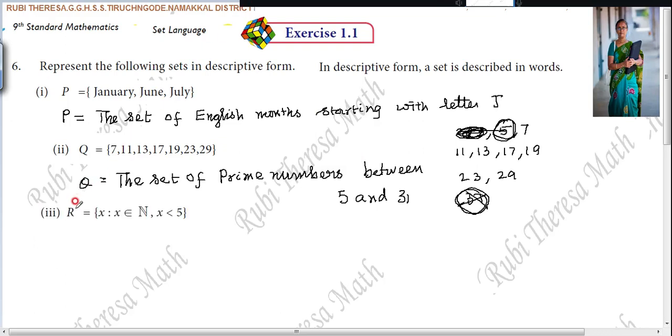Next subdivision: R equals x such that x belongs to natural number, x is an element of natural number, and x is less than 5. So how do you start? Same thing: the set of, what type of number? The set of natural numbers. But what is the condition? Less than 5. The set of natural numbers less than 5. You have described with the help of words.